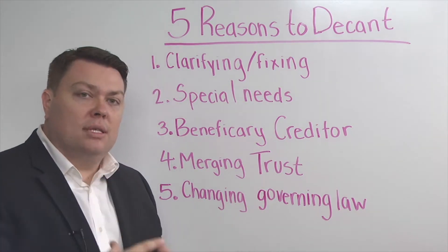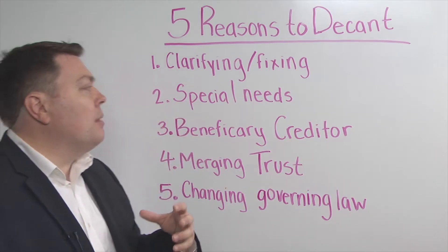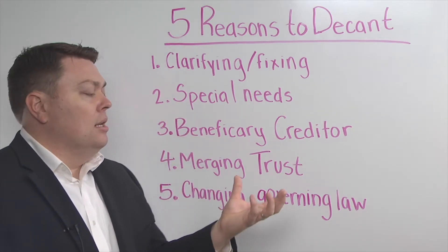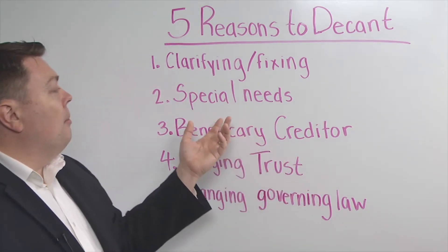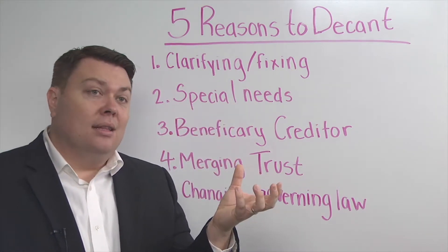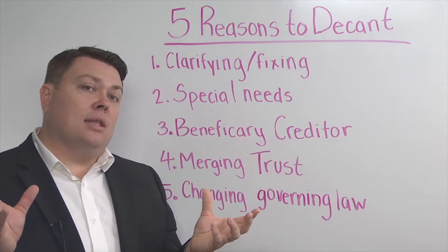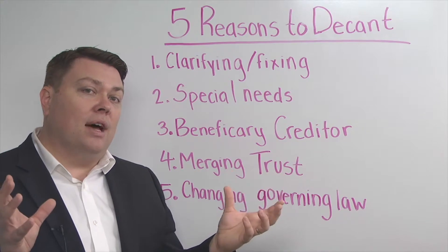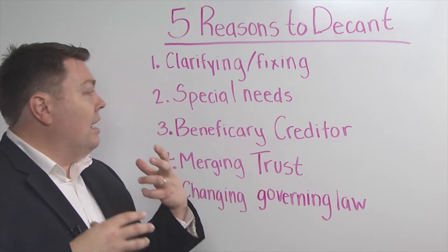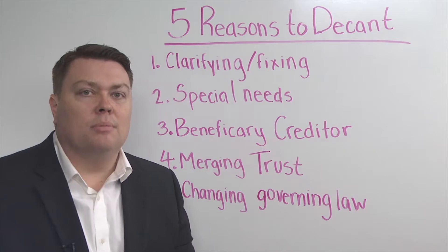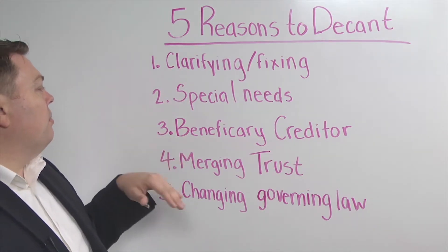So let's say you have a special needs beneficiary who is about to receive a bunch of assets from a trust. You can decant from the old trust — which would disqualify them from government assistance — into a new trust that has special needs terms in it.